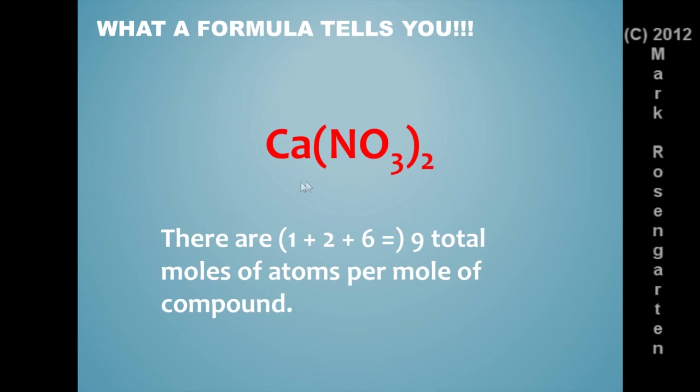There's one plus two plus six is nine total moles of atoms per mole of compound. So if we were to decompose calcium nitrate into its original elements, calcium, nitrogen, and oxygen, we'd have a total of nine moles of atoms for every mole of compound we decompose.